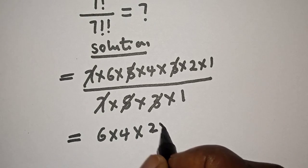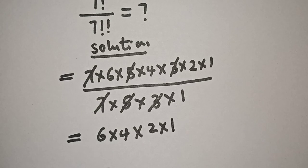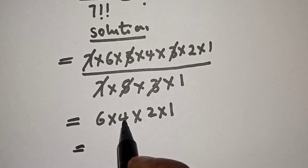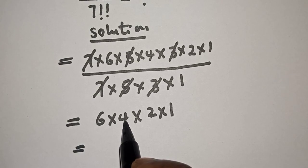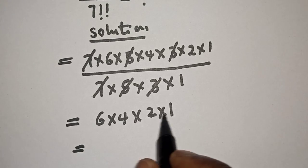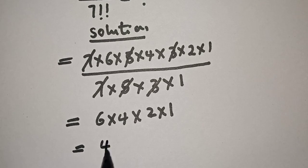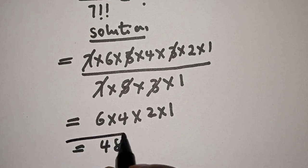Then this is equal to 6 times 4, which is 24, times 2, which is 48, times 1, which is 48. And this is the final answer.